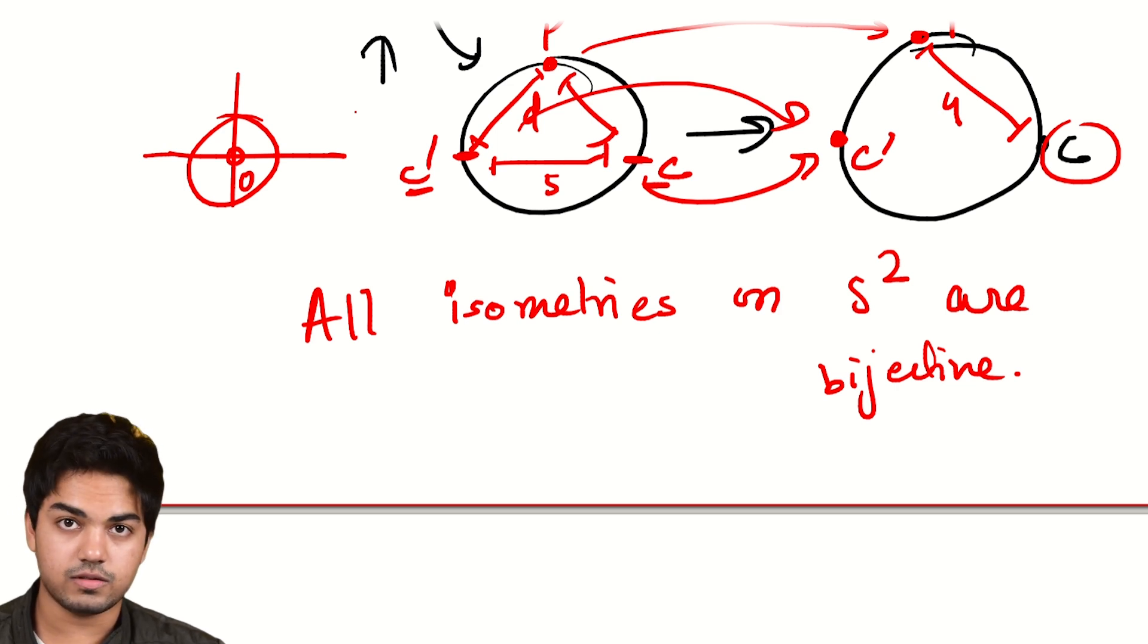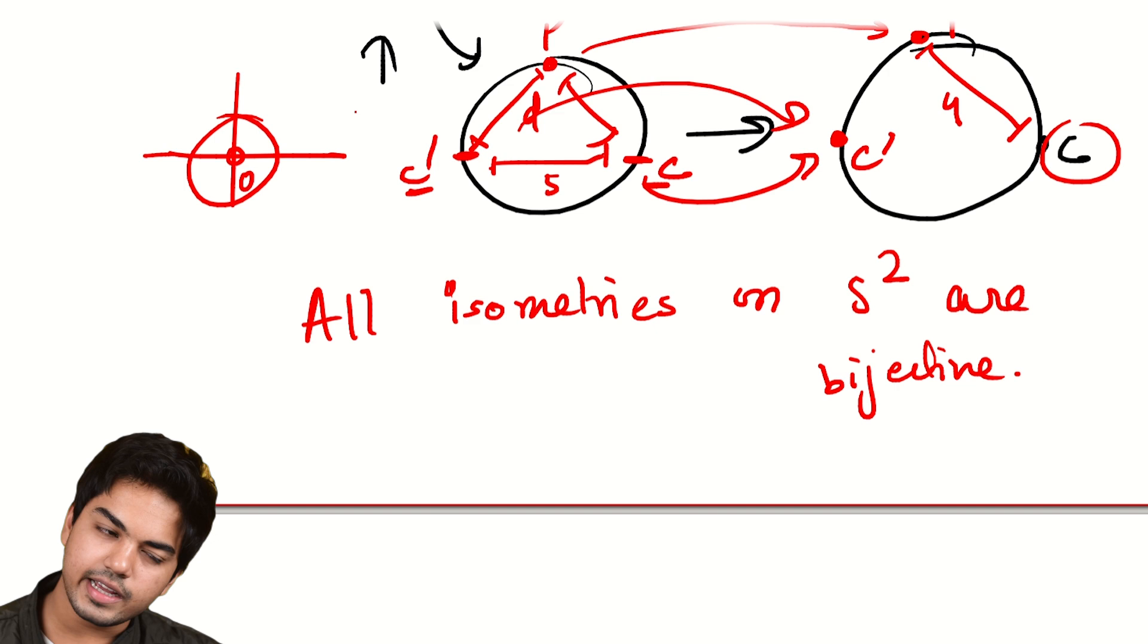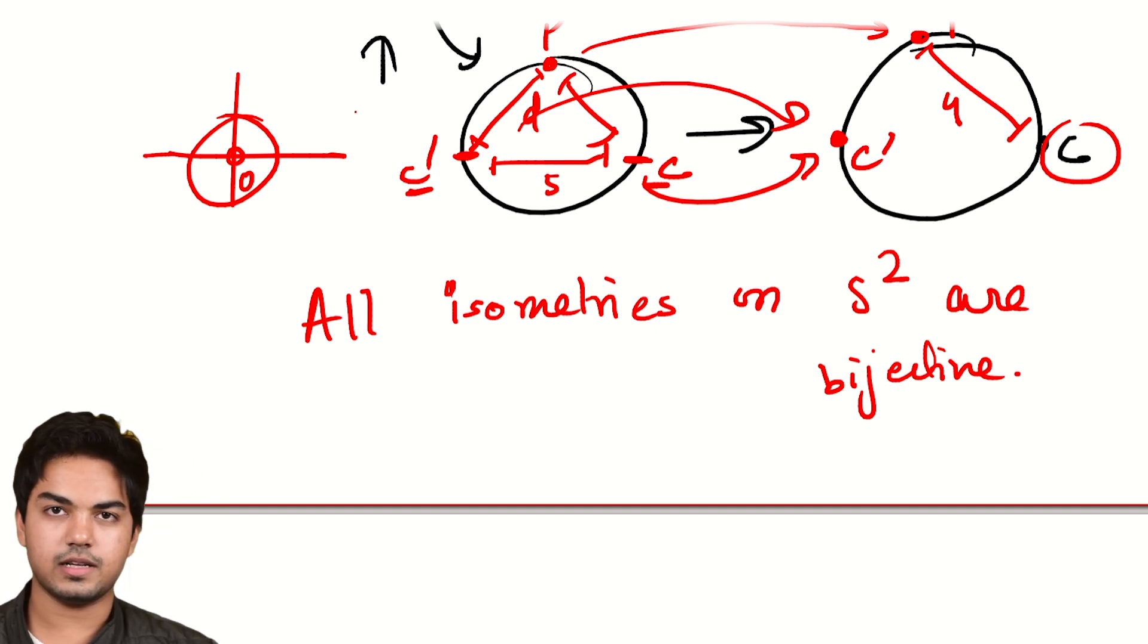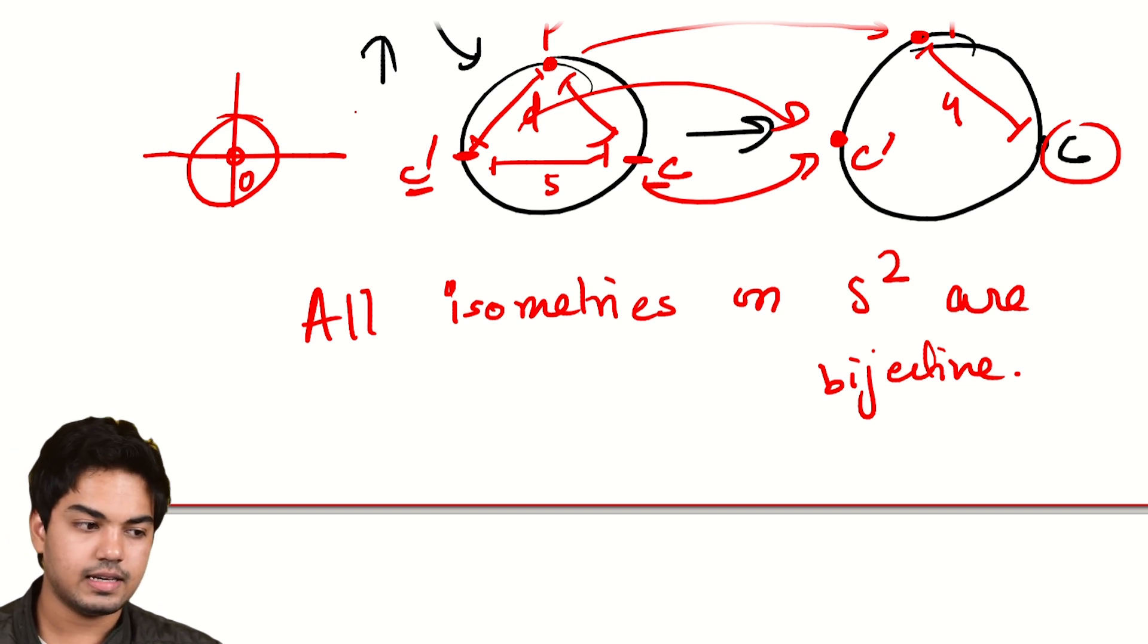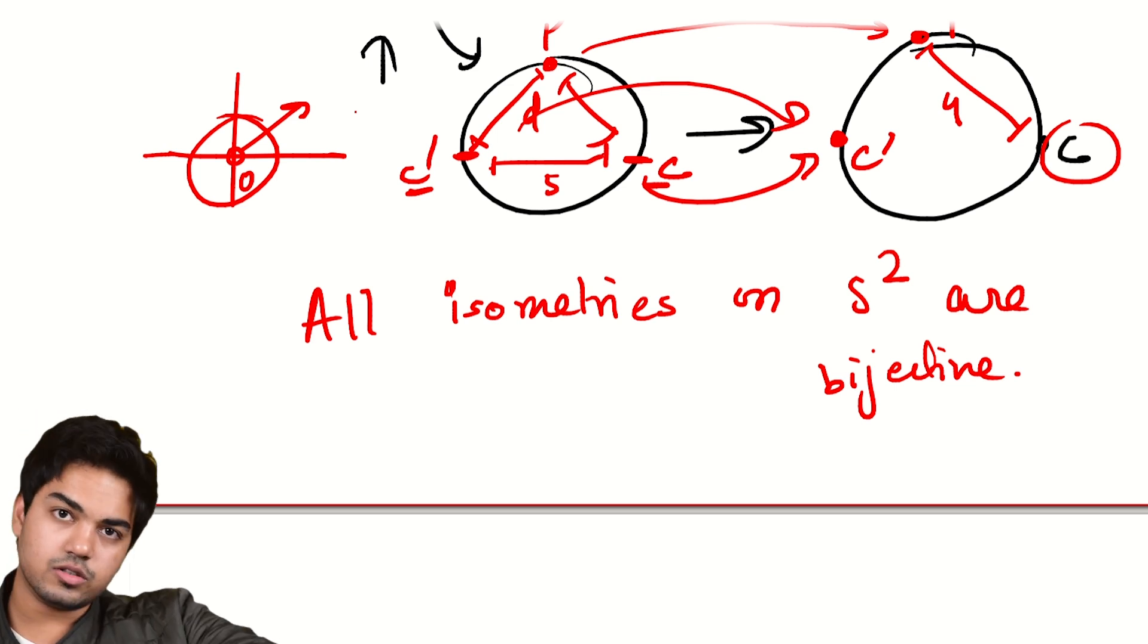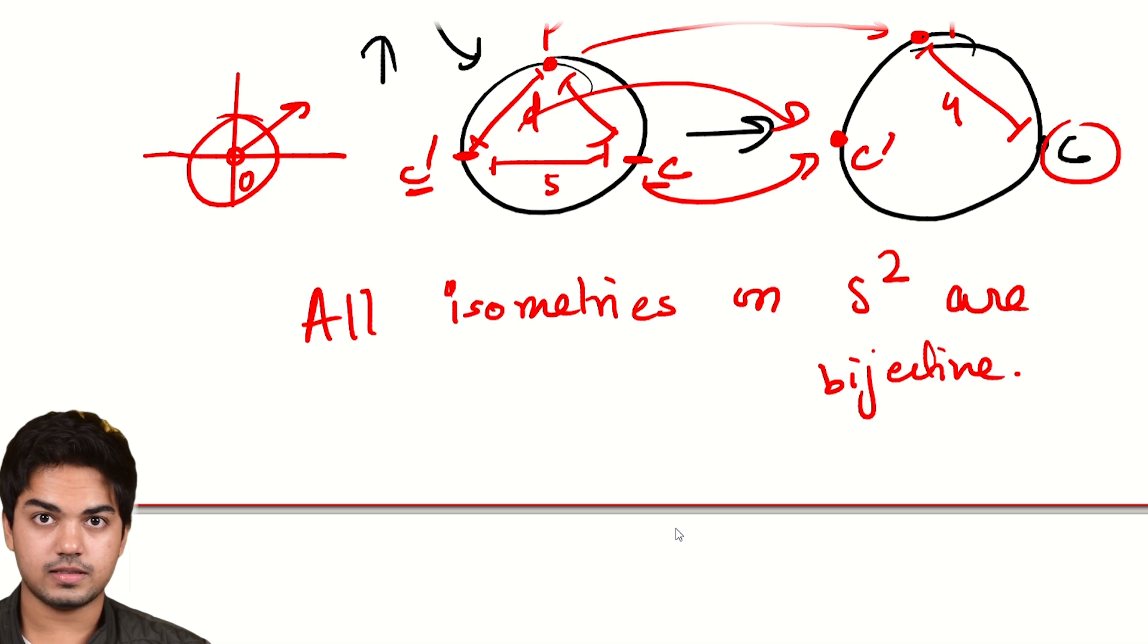In fact, you can even classify all of the isometries. It's a hard-ish problem, you could try it on your own. Find all the isometries on the plane. What you'll see is that it'll fall into one of four categories. It's either a translation, where every point moves by some amount, the same fixed amount. It's a rotation, it's a reflection, or it's a glide reflection. Those are all the four possibilities.